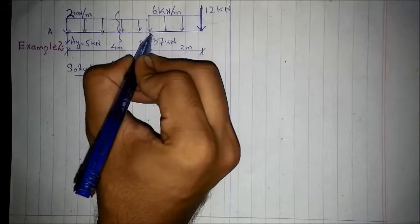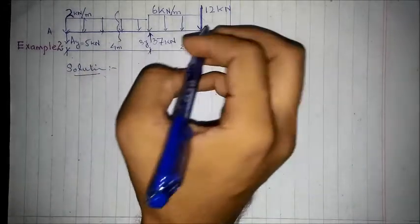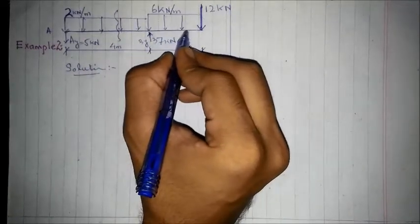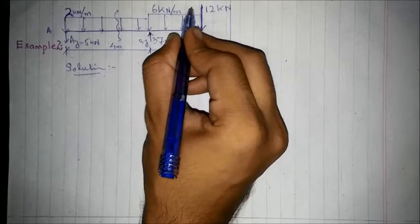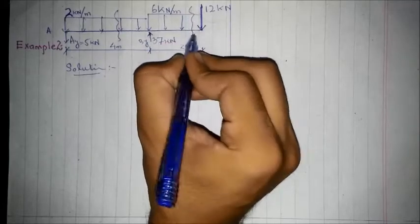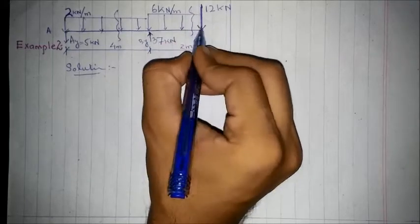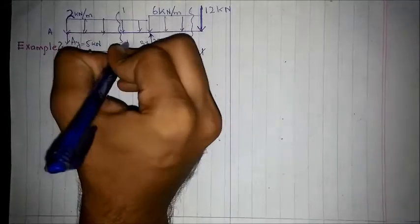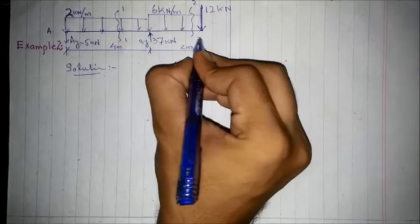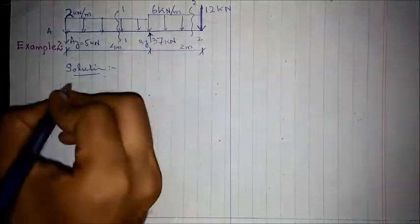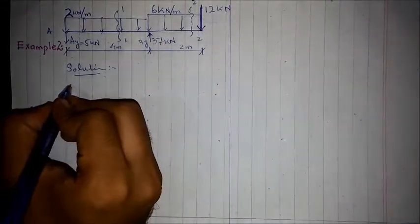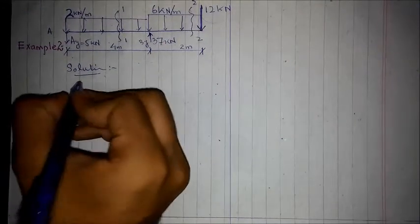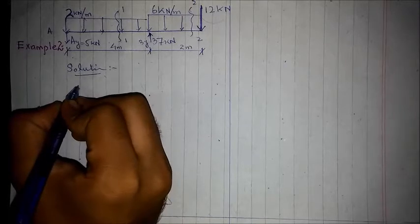In this beam we need to consider how many sections. Section number 1: there is one variability in the load in the span and then the same load continues. Then section number 2 as the load varies. So we have section 1 and section 2, and for each section we are required to find out the equations of shear and moment.